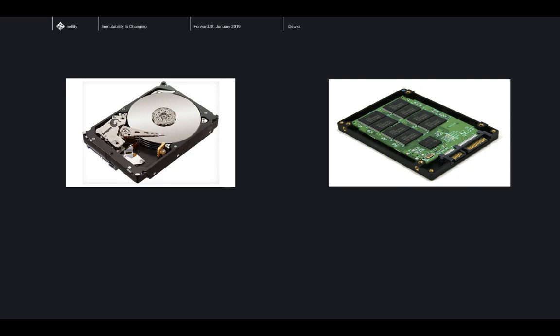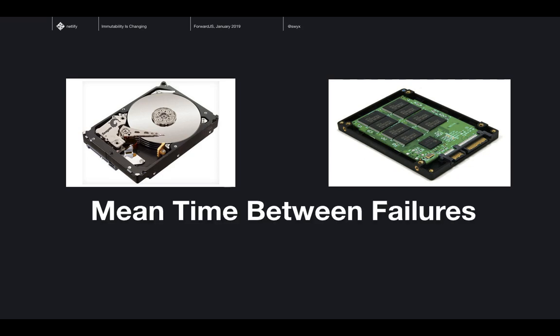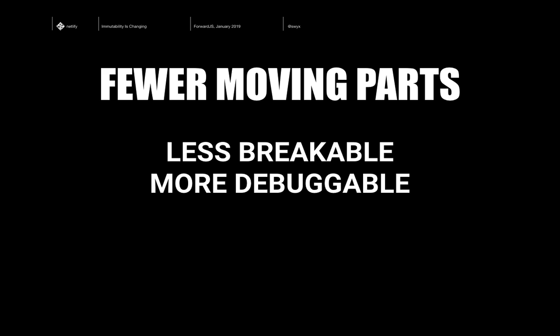To answer that, I'm going to go back in time. On the left is a hard disk drive — that's how we used to store data in computers. On the right is a solid state drive, which is what's in our laptops today and on our phones. The reason SSDs are taking over is this one industry metric called mean time between failures, MTBF. Hard disk drives are about 500,000 hours; solid state drives go up to 2.5 million hours. That's fundamentally because of fewer moving parts — they're less breakable because there's less to break. The analogy to software is: your software can be less breakable and more debuggable if you have fewer moving parts.